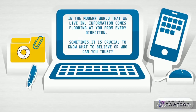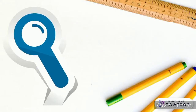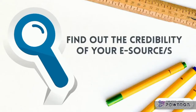In the modern world that we live in, information comes flooding at you from every direction. Sometimes it is crucial to know what to believe or who you can trust. Think of credibility as a sliding scale — at one end are resources that are unreliable, and on the other side are resources from people with credentials. Now let's find out the credibility of your resources.